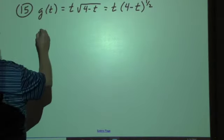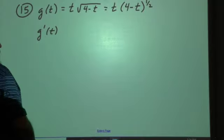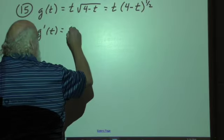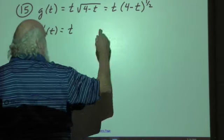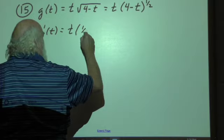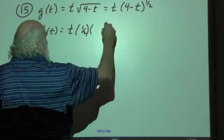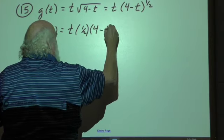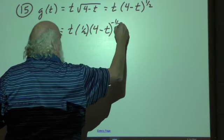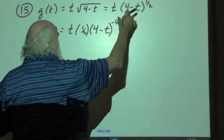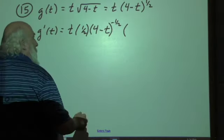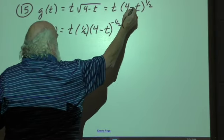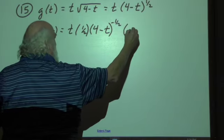It's going to be t times 4 minus t to the 1 half power. Okay? So now I'm going to find the derivative of that. And this is going to be, I'm going to take the t times the derivative of that. So take the 1 half down. This is going to subtract 1 from the 1 half. So the 4 minus t stays intact there. And that becomes the negative 1 half. And then I take the derivative inside this u, if you will. And the 4 is a 0, so that drops out. And the derivative of negative t is just negative 1.